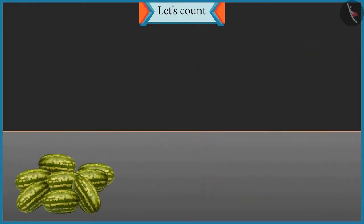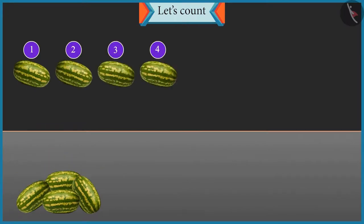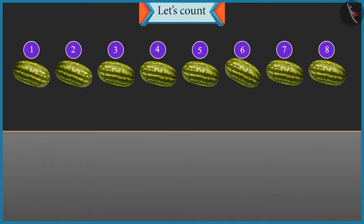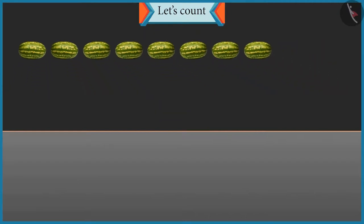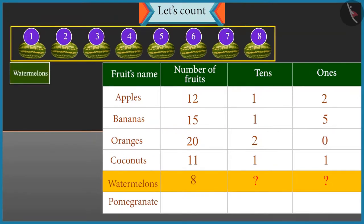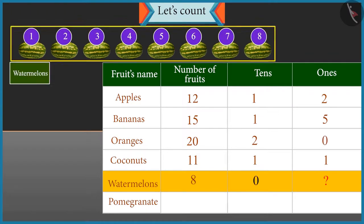Now count these watermelons and tell their count. One, two, three, four, five, six, seven and eight. There are eight watermelons. So how many tens and ones are there in eight? There are only eight watermelons, so we cannot form any group of ten. So there is zero tens and eight ones.